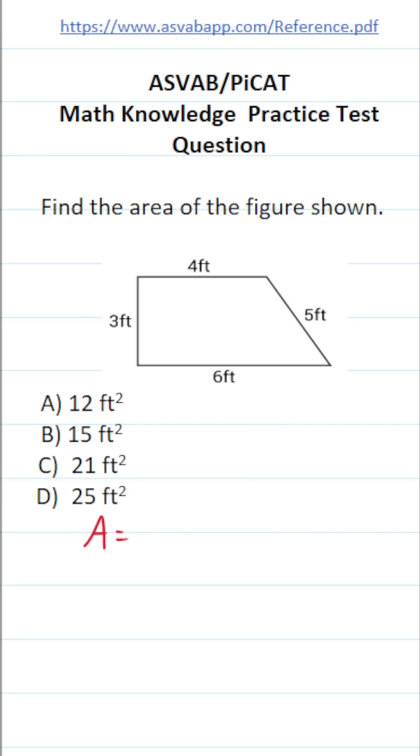As far as finding the area of a trapezoid goes, the formula is pretty easy to remember. It's one half times base one plus base two times the height of the trapezoid.